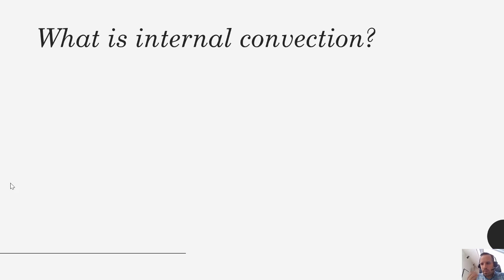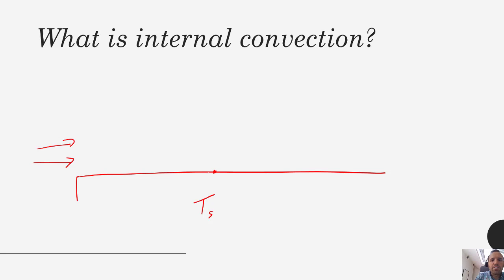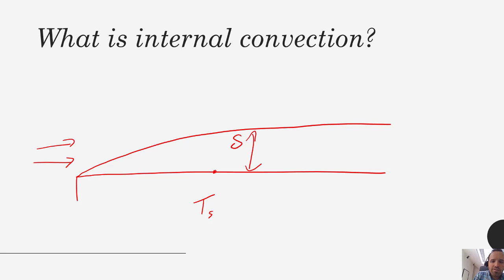What is internal convection? To start, let's revisit external convection. If you recall, we talked about having a flat plate heated at a temperature T_s. As the fluid encountered the leading edge of that flat plate, you started to have both a velocity and a thermal boundary layer form. External convection has a lot to do with the formation of these boundary layers.